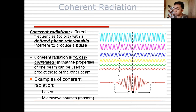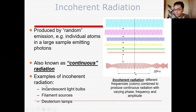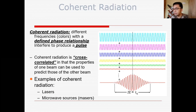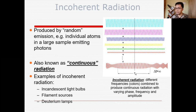Incoherent radiation is a random emission of photons — for example, individual atoms in a large sample emitting photons. This is also known as continuous radiation. Examples include incandescent light bulbs, film sources, and deuterium lamps. The wave pattern of incoherent radiation is irregular compared to coherent radiation, and it produces continuous radiation with varying phase, frequency, and amplitude.